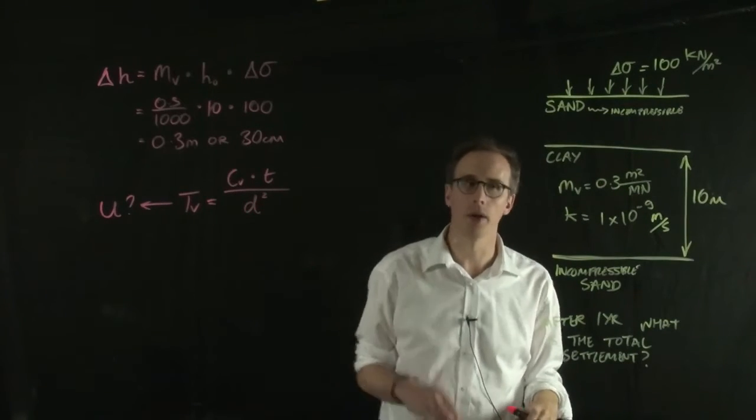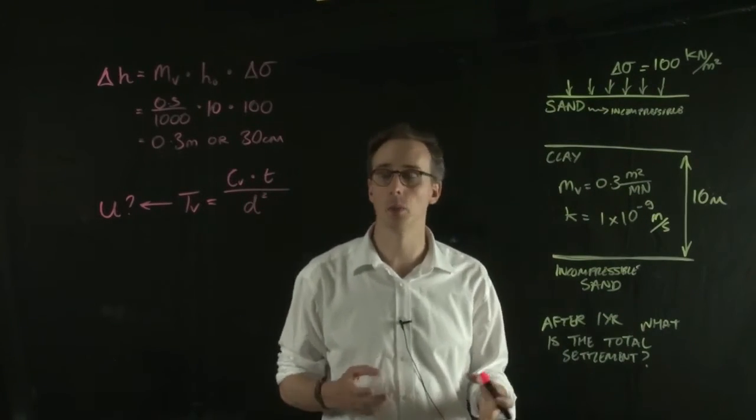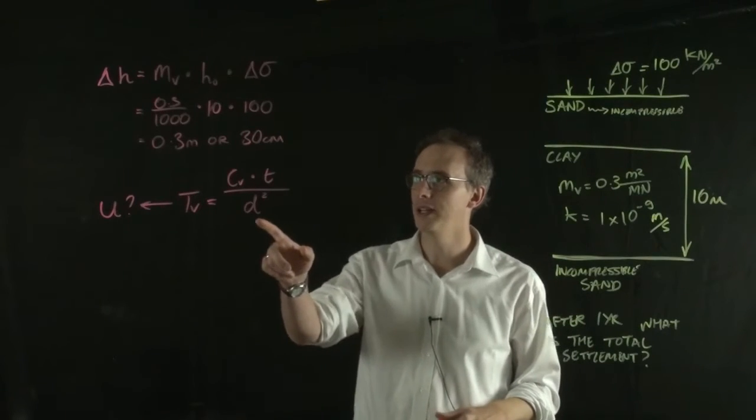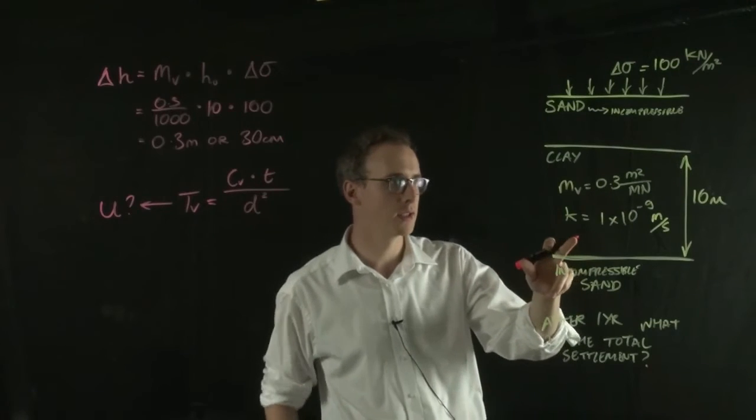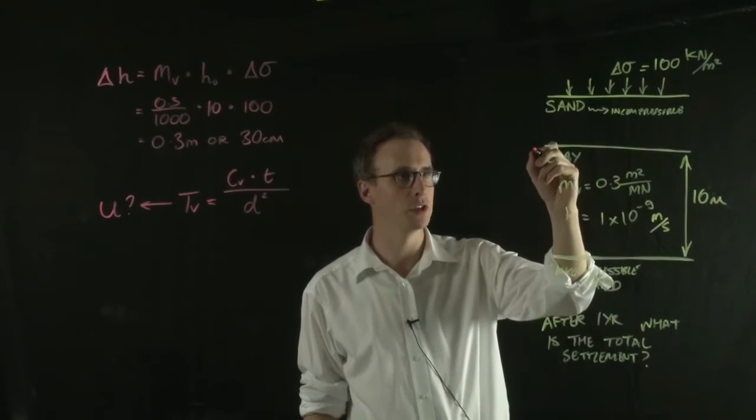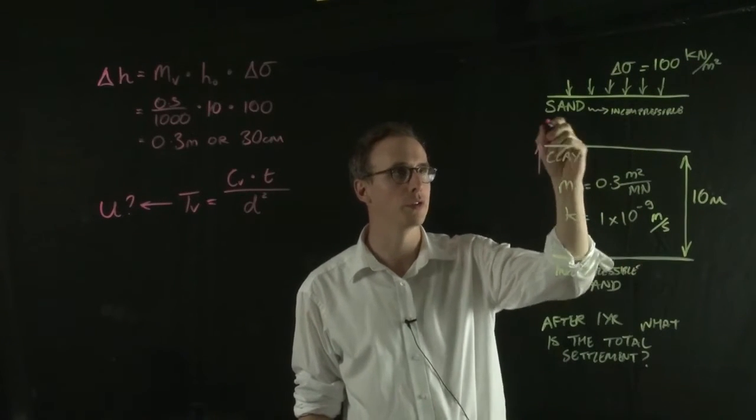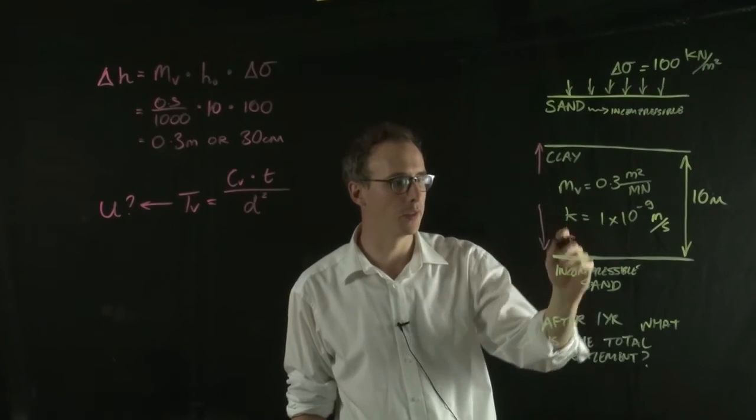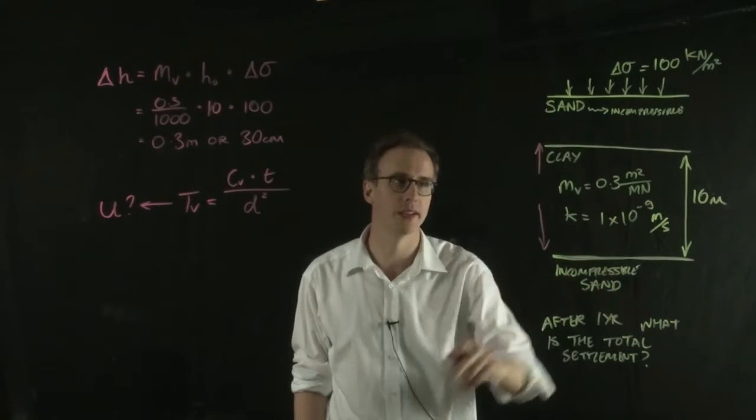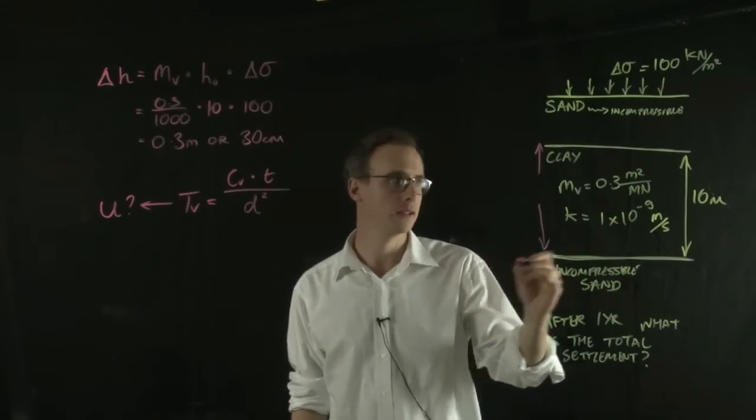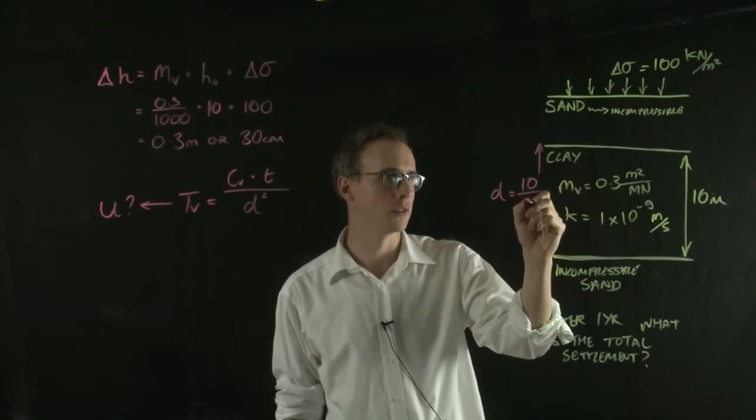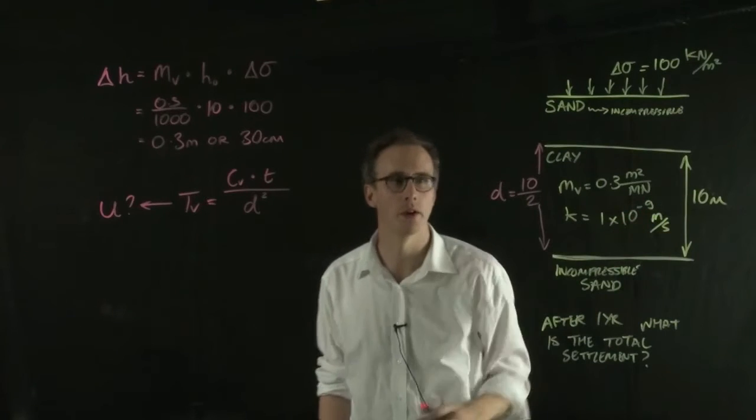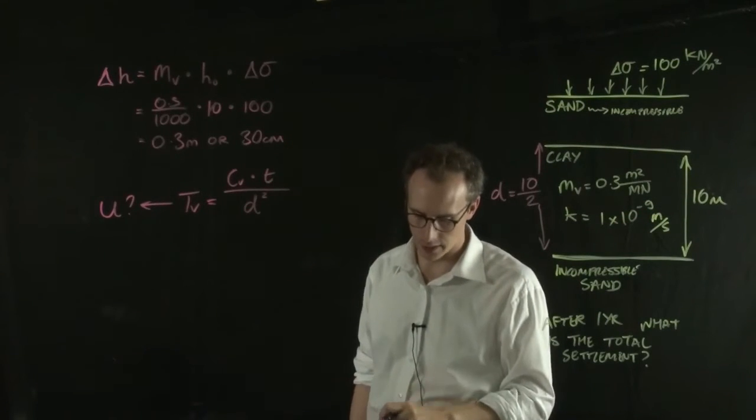Now we know that T now is, or in our question, it's one year. We know our D squared value, so the drainage pathway is now the thickness of the layer over 2 because water can flow both through the sand at the top and the impermeable sand at the bottom. So our D is equal to 10 over 2 now, the thickness of the layer over 2.